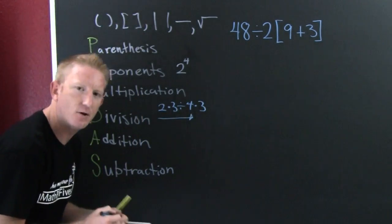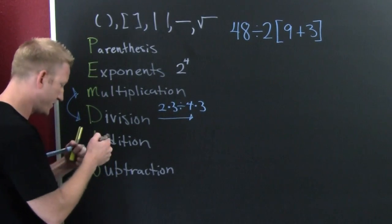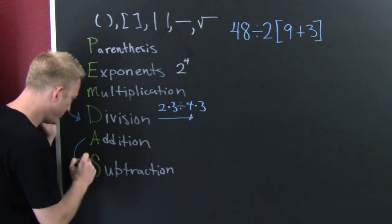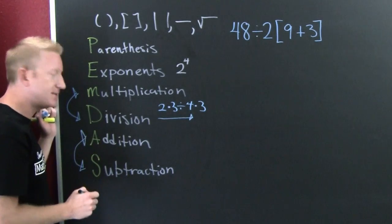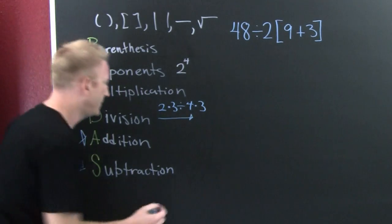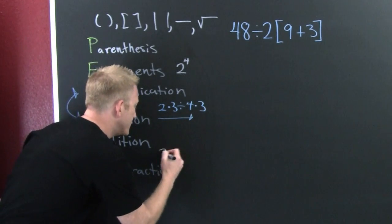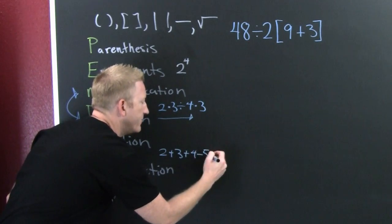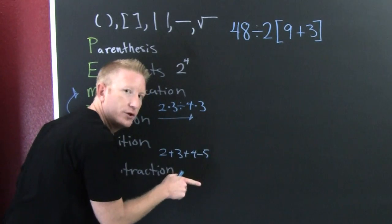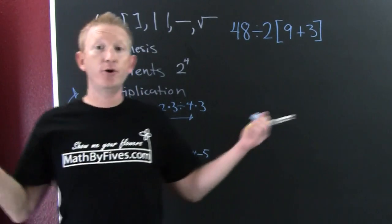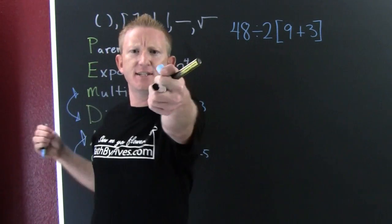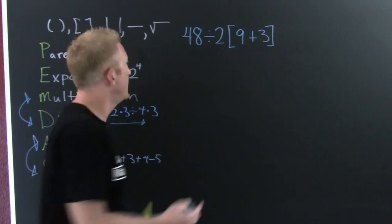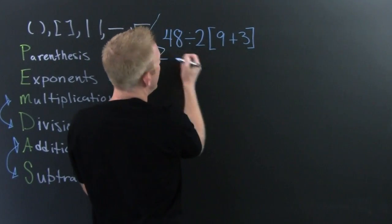The same thing goes for addition and subtraction — they go from left to right when written like two plus three plus four minus five. You go in that order. So in short, let's get to the example — the thing that's causing all the commotion.